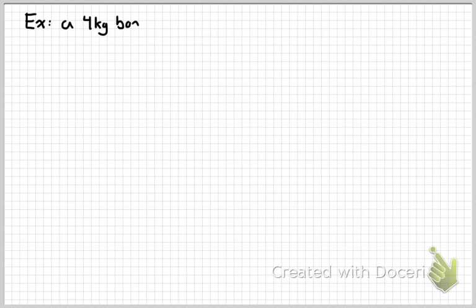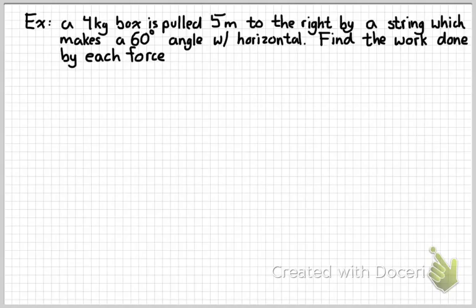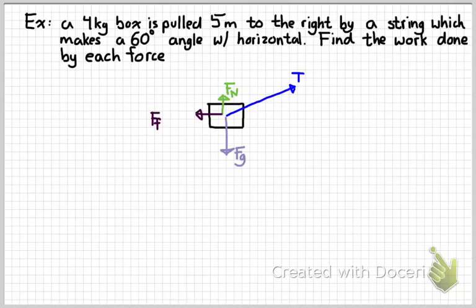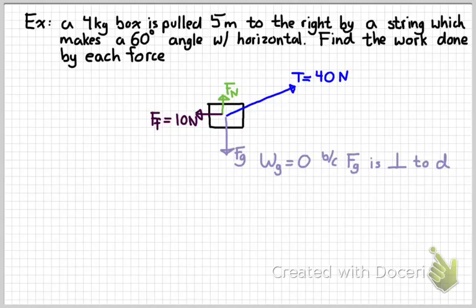So let's take a real simple example. Let's suppose we've got a 4 kilogram box that we're pulling to the right by a string that makes a 60 degree angle with the horizontal. And the question is, how much work is done by each of those four forces? And let's just say that that tension force is 40 newtons, and that the frictional force going the opposite direction is 10 newtons. So we can figure out the work done by each force, but two of these forces are perpendicular to the direction it's going.